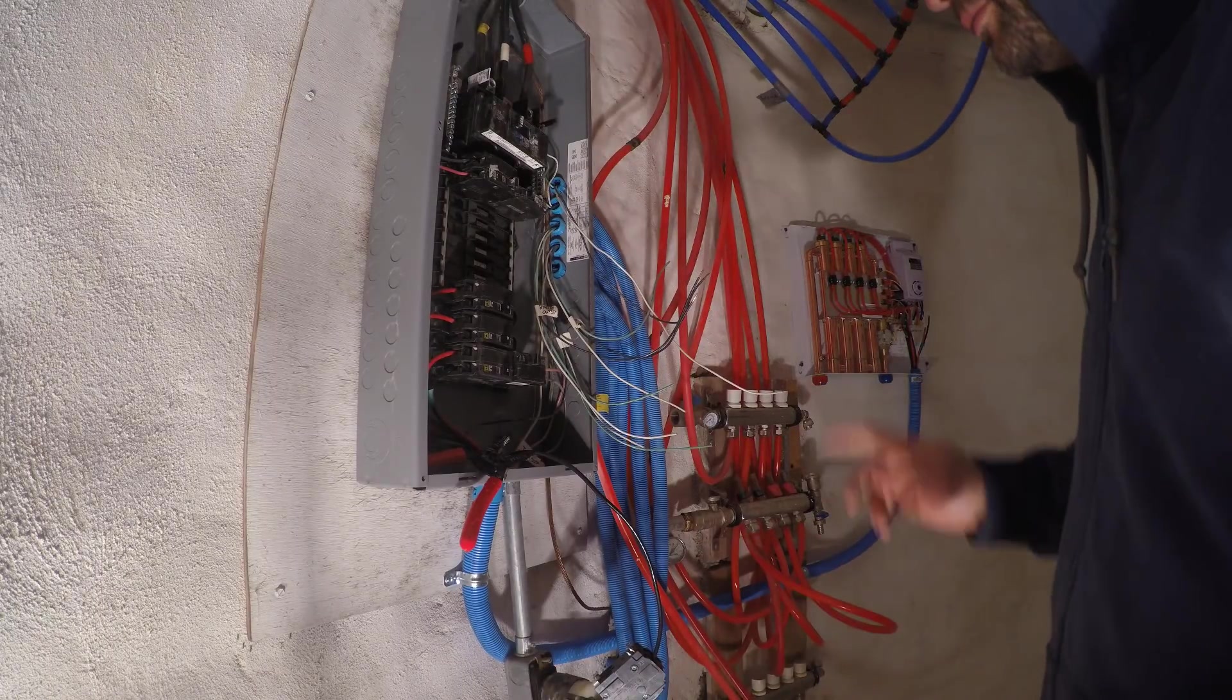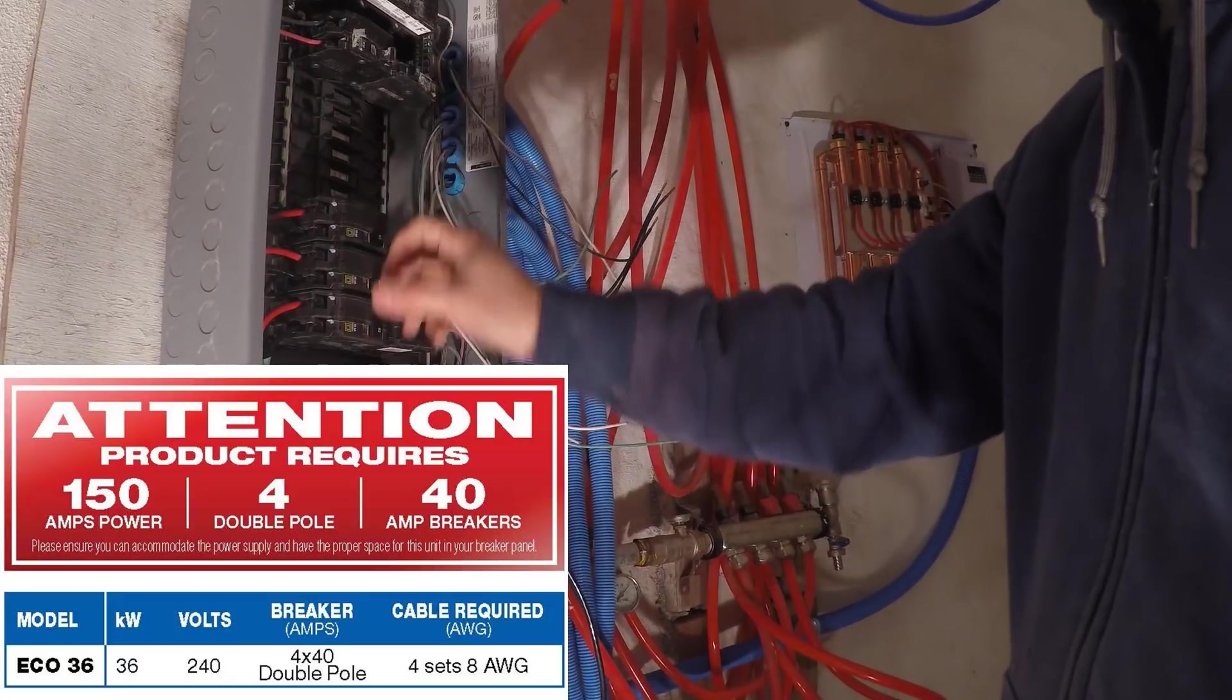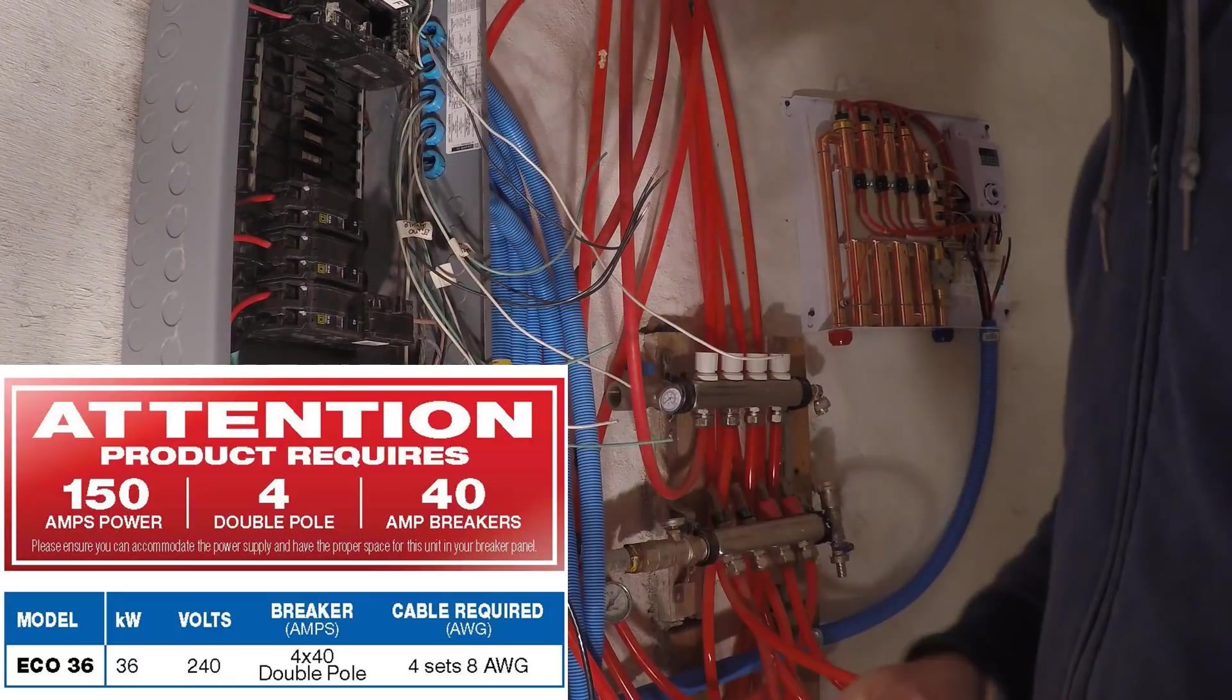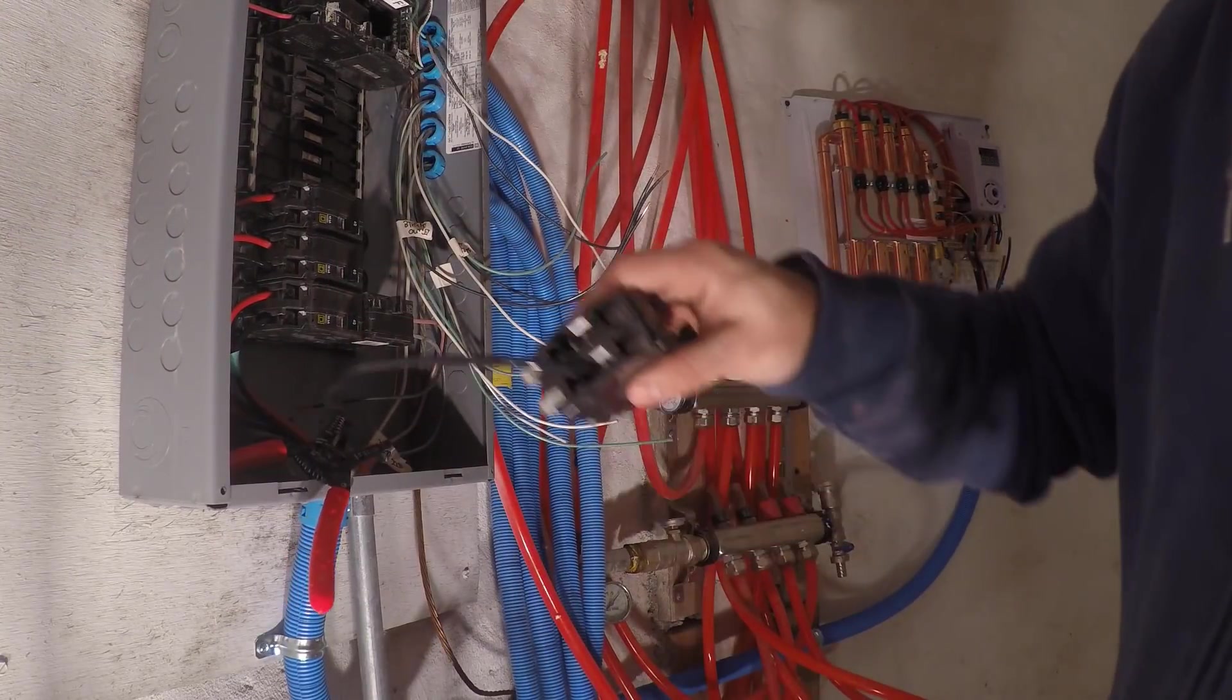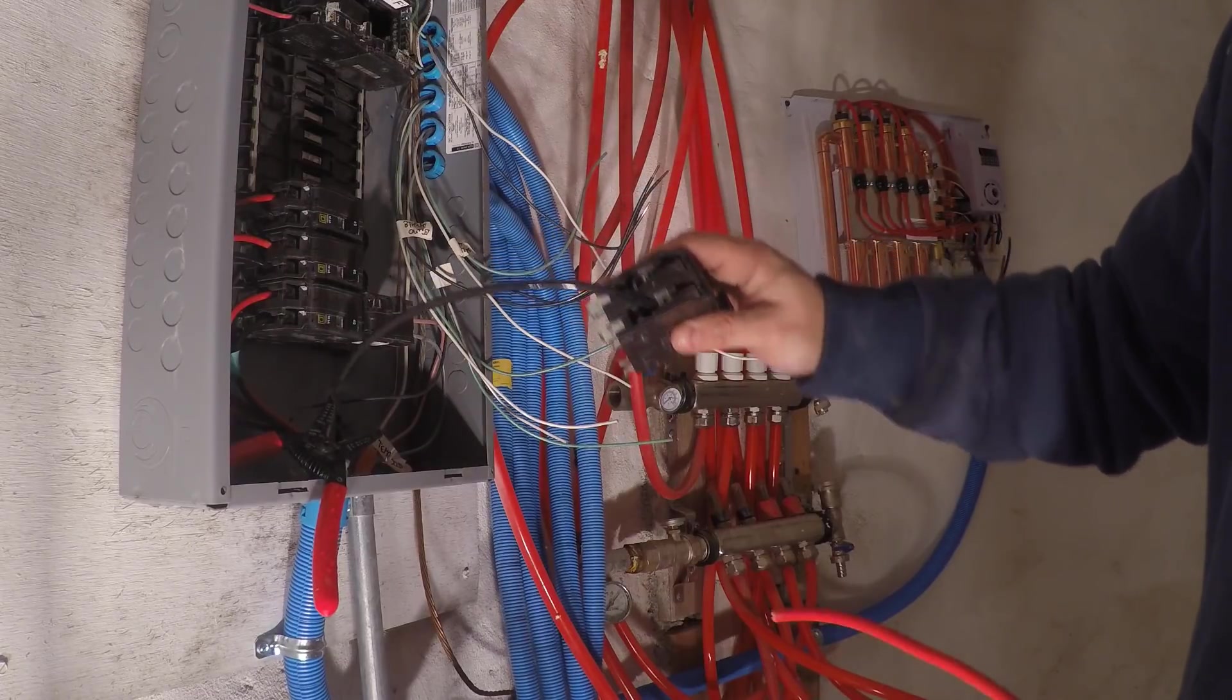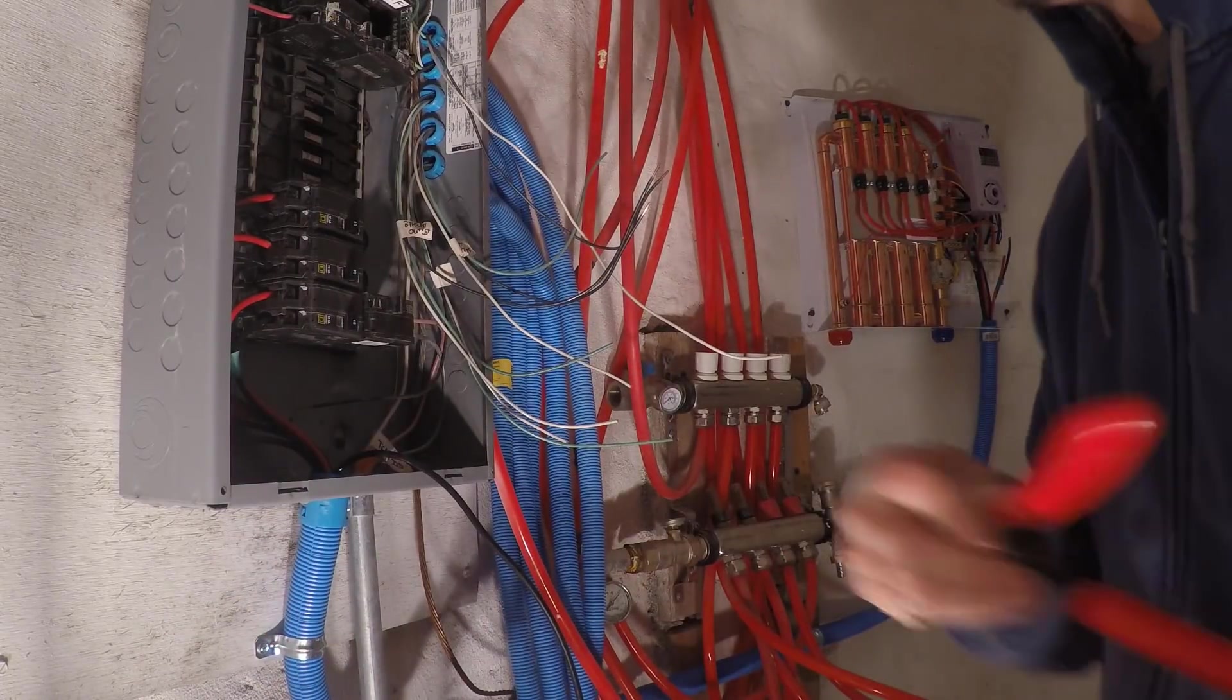This unit actually requires four 40 amp double pole breakers. The first three are already installed, and here's the fourth, and you can see the black wire is already attached. Let's just attach the red wire.